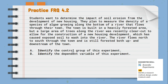Here's our practice FRQ for 4.2. Take a moment, pause the video, make sure you answer it in your FRQ journal and on the Edpuzzle. At this point, we should have answered our FRQ. It states that students wanted to determine impacts of soil erosion from the development of new housing. They plan to measure the density of a species of algae growing along the bottom of a river that flows through their town.